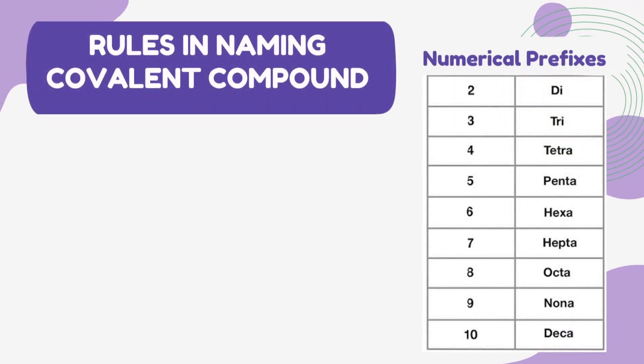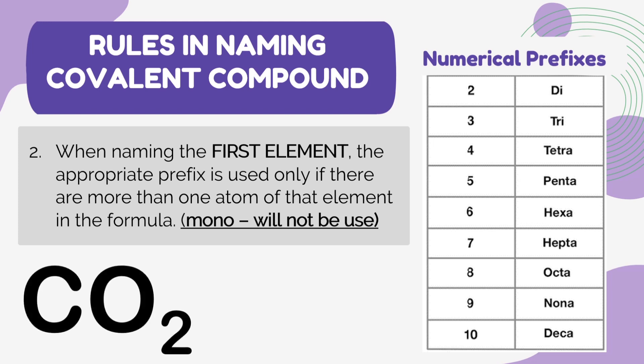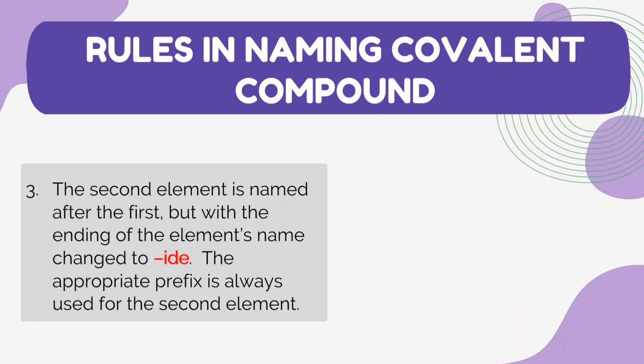For the second rule: when naming the first element, the appropriate prefix is used only if there is more than one atom. 'Mono' will not be used for the first element. For example, in CO2 we write 'carbon' instead of 'monocarbon'.